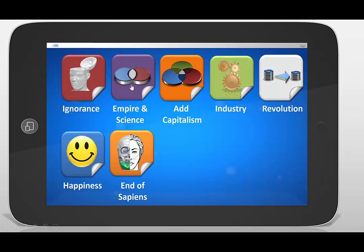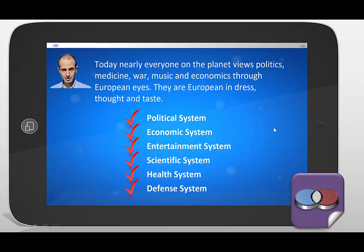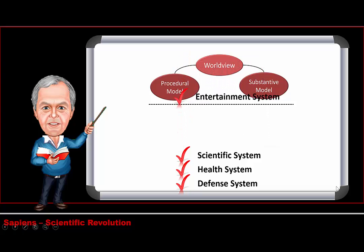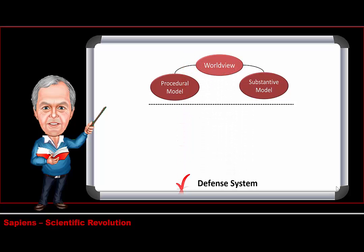Then Harari circles around on the idea of empire and science. He says that today nearly everybody on the planet views politics, medicine, war, music, and economics through European eyes — they are European in dress, thought, and taste. Our political systems, our economic systems — all of our systems are basically European. The political system, economic system, entertainment system, scientific system, health system, and defense system are things that make up an individual's worldview.